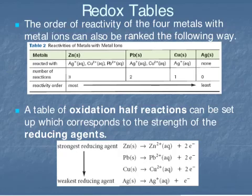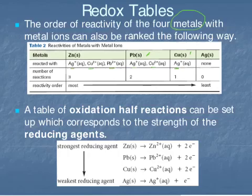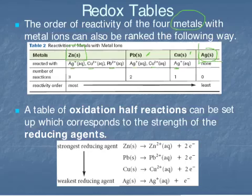We just determined the reactivity of metal ions. We can also determine the reactivity of the solid metals. In this case, zinc reacted with silver ion, copper ion, and lead ions — it reacted with all three. Solid copper only reacted with silver ions, whereas solid silver did not react with any of the ions. So we've determined the relative strength of these metals: zinc was the most reactive and silver was the least reactive.